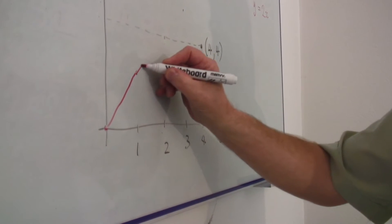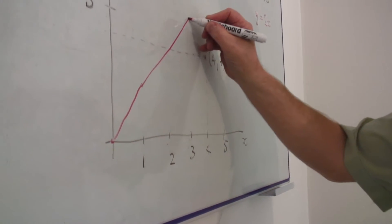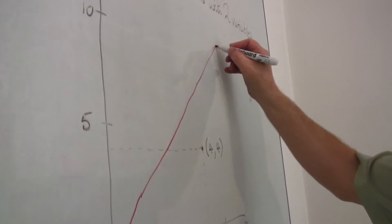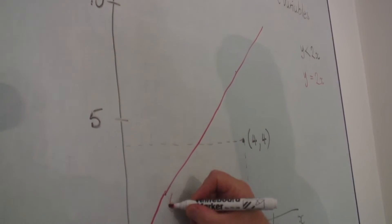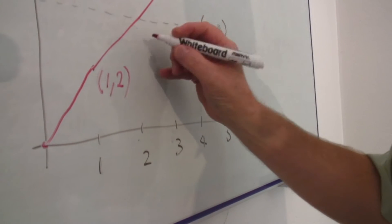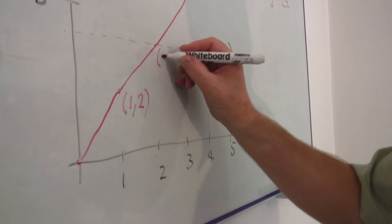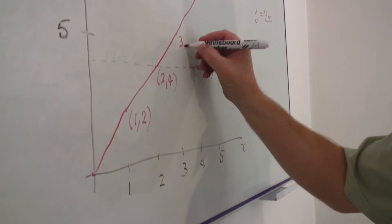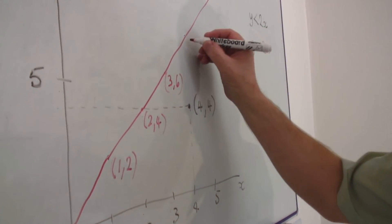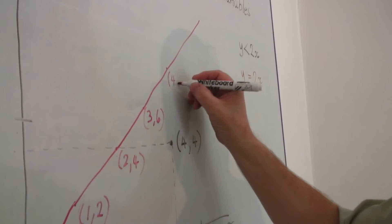Then two, four, and so on. It goes up a line something like that. So this is the point one, two. This is the point two, four. This is the point three, six. And this is the point four, eight.